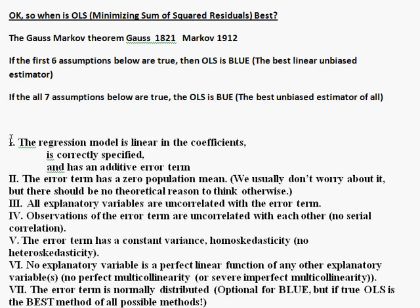We're going to go through these assumptions in lecture five one by one, fairly quickly. Then the rest of a typical regression class will take each assumption in more detail and examine what you do if assumption one is violated — how can you check it and how can you fix it? Same for assumptions two through six: how do you check, what is the problem? Some of these assumptions are more important than others, and some people overlook certain ones, but they're all important and we'll discuss them one by one.